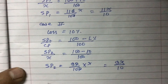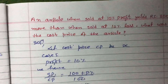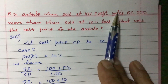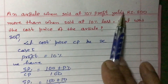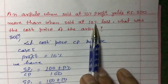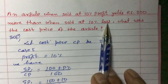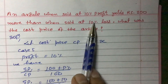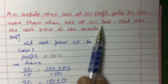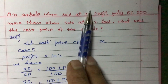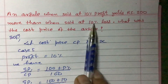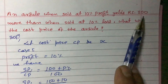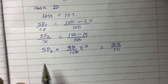According to the question, when sold at 10% profit the article fetches rupees 200 more than when sold at 10% loss. So the selling price in the first case is 200 more than in the second case. That means SP1 minus SP2 equals 200.